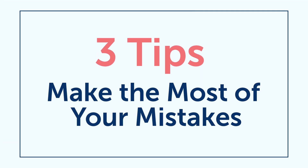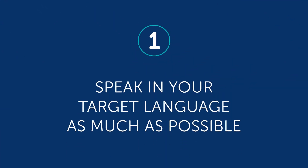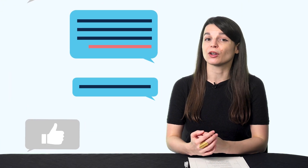So what can you take away from this? Let's jump into the second part: how to use mistakes in your language learning. Here are three tips to help you make the most of your mistakes. Number one: speak in your target language as much as possible. Part of the learning process is making mistakes. Accept that mistakes are going to happen. If you're not making any mistakes ever, then you're probably not challenging yourself.